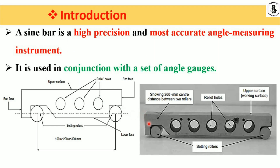This is the actual picture of a sine bar. Setting roller number one is shown, and the distance between the center rollers is 100 mm, 200 mm, or 300 mm. According to requirements, you select the different size of sine bar for measuring or indirect angular measurement. This is the upper surface, also called the working surface.